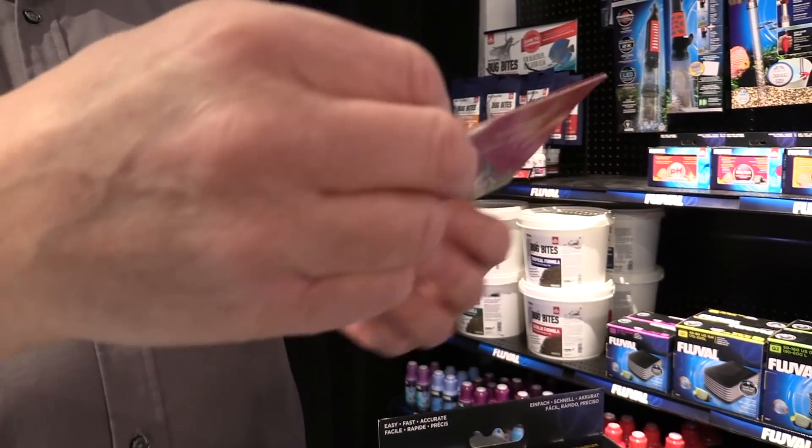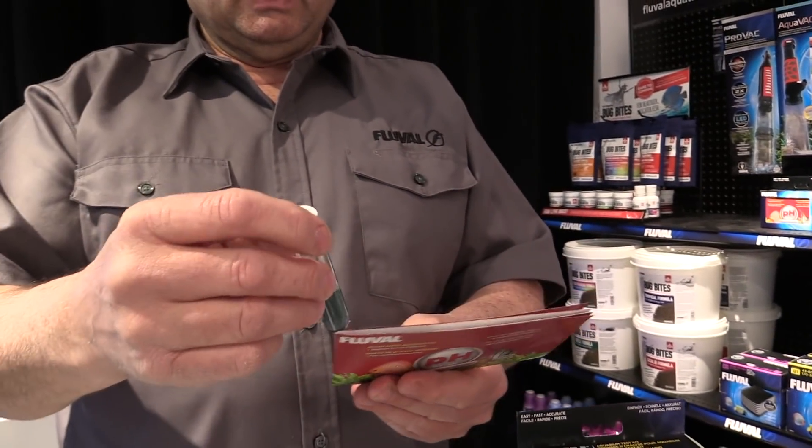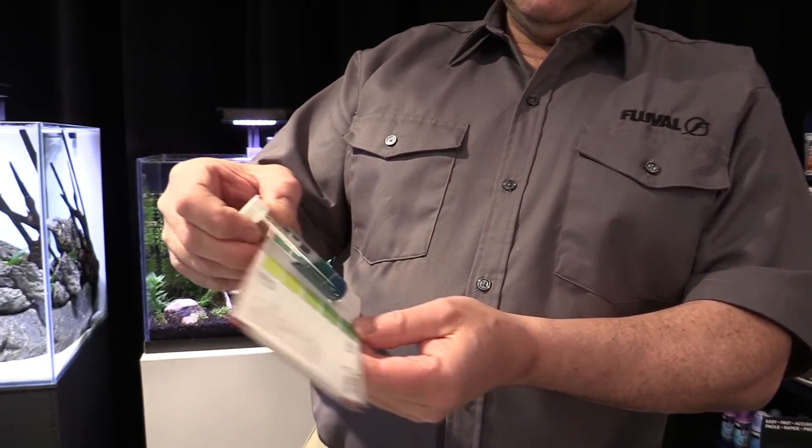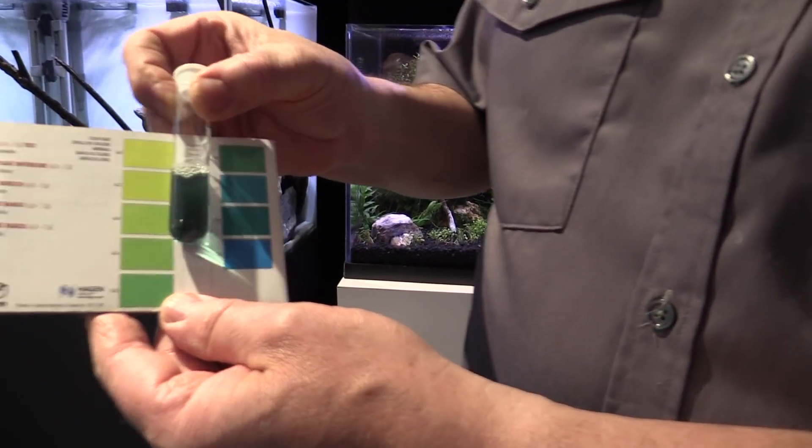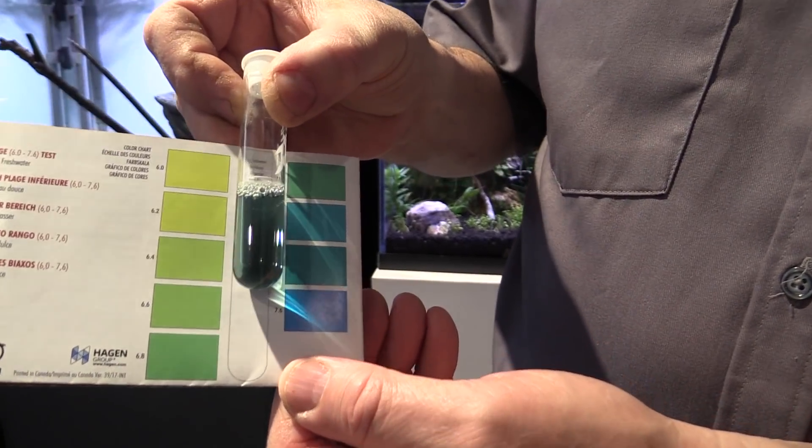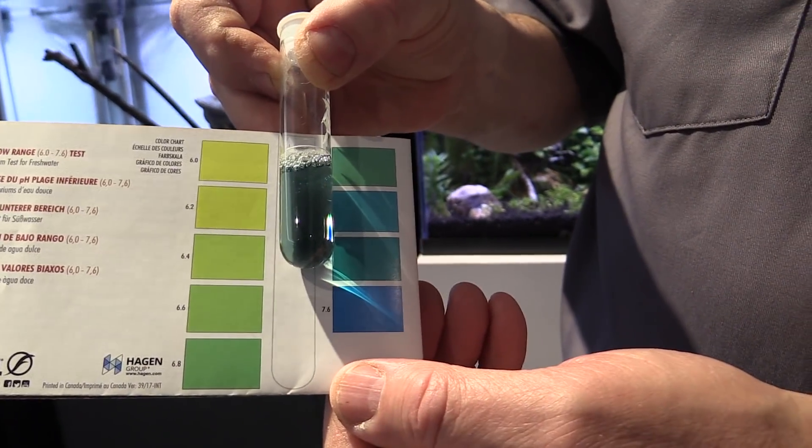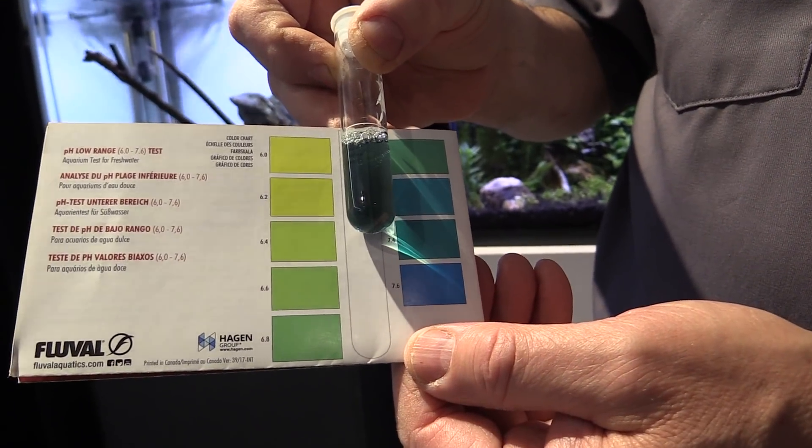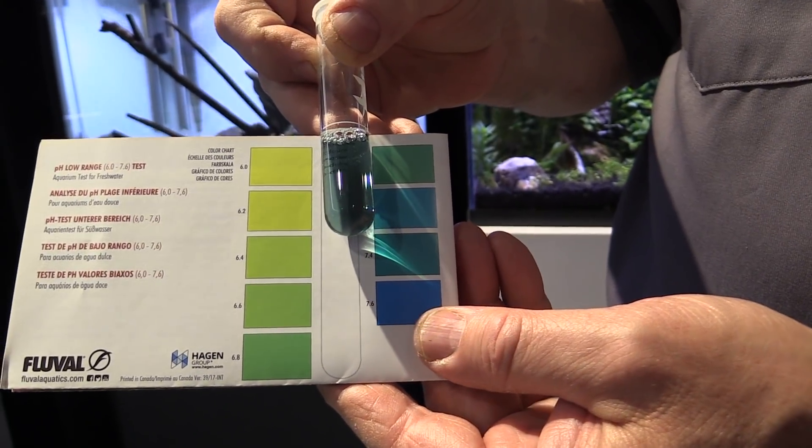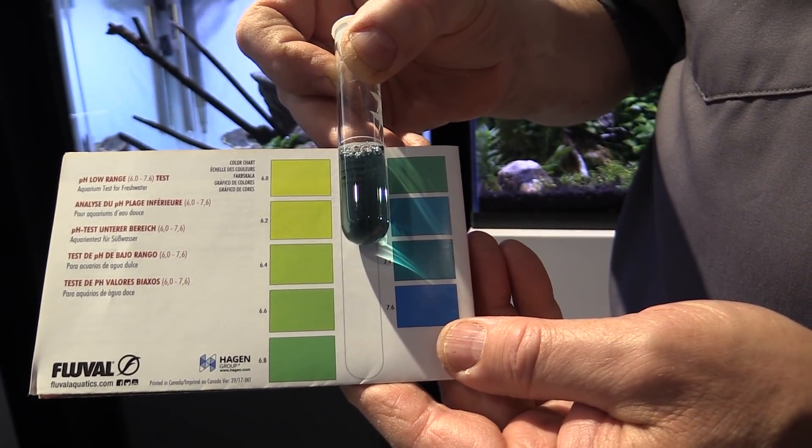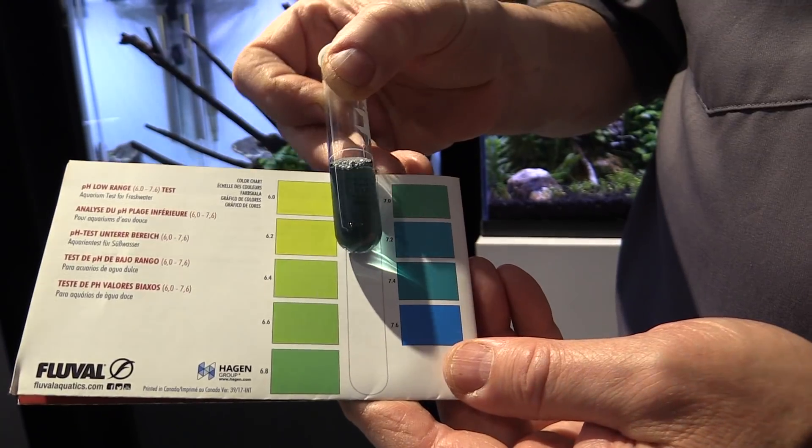So in this case I'm going to be looking at the result here. Now we're just turning around for the purposes of the camera, it's not really the way I would do it, but in this case you can see the pH is somewhere between seven and seven point two, which is a regular type of result to see.